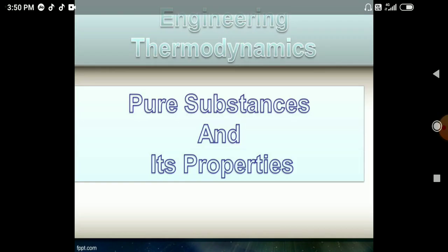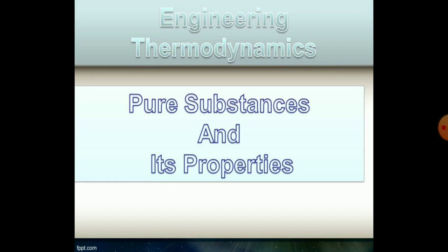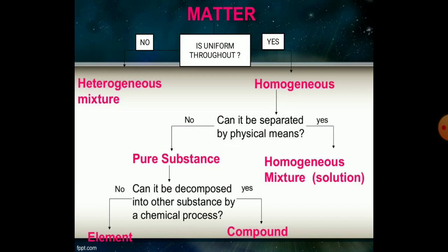The topic of today is Pure Substance and the properties of pure substance. Matter is uniform throughout. Matter can be a heterogeneous mixture of various particles or homogeneous mixtures of various particles. Homogeneous particles are further classified as those separated by physical means, which are pure substances, and homogeneous mixtures, which are solutions mixed with one or more than one component.